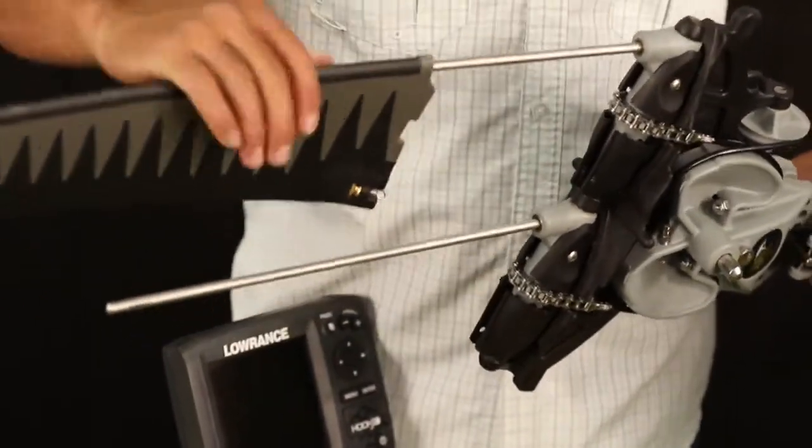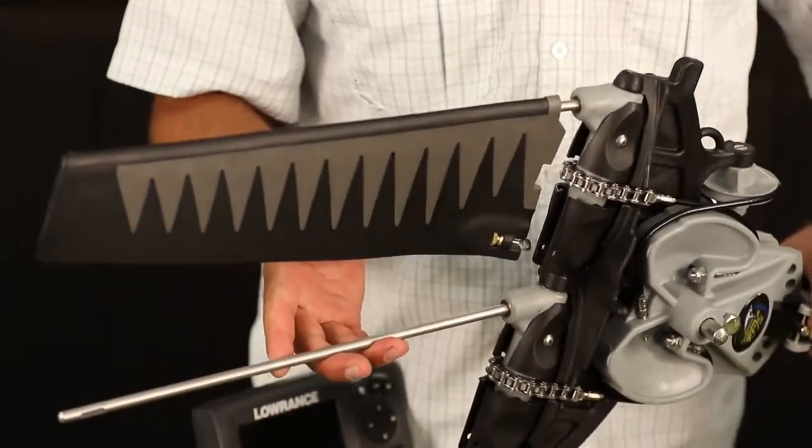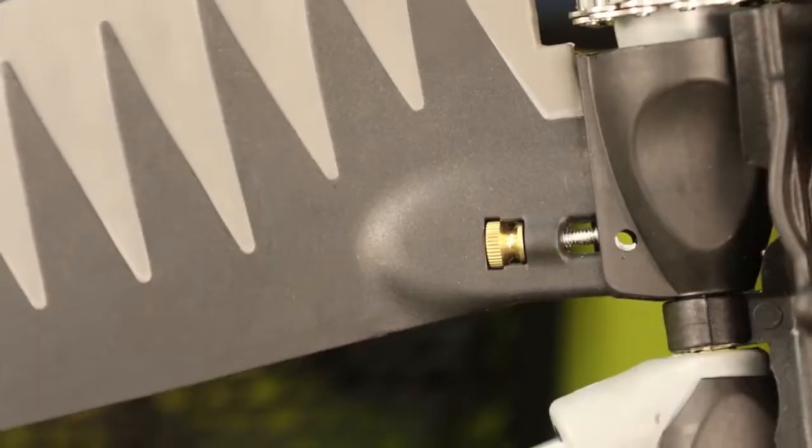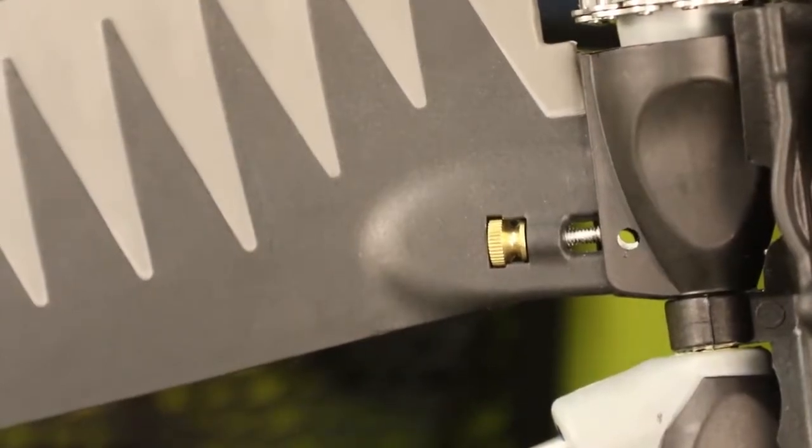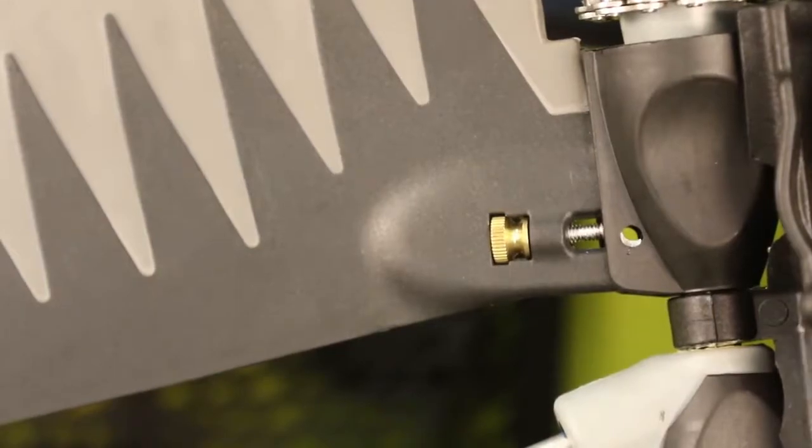I chose the gray turbo fin. Just personal preference, but we also offer the fin kit in red and blue. Once the fin is slid all the way up on the fin mast, you're going to need to insert the clevis ring and pin to secure the fin.